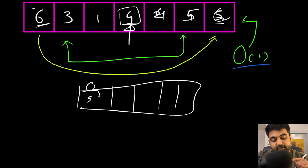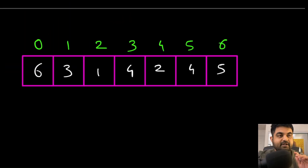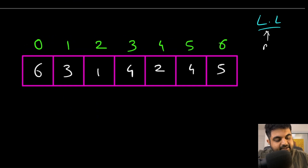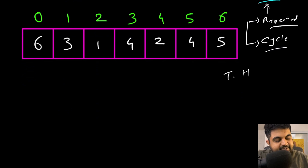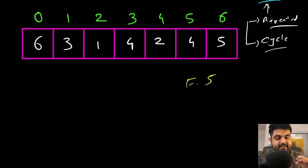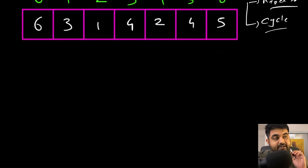For the most optimal solution without modifying the array, we are going to use a very popular technique from linked lists: the tortoise and hare algorithm, also known as Floyd's cycle detection. We use two pointers — a fast pointer and a slow pointer — and iterate until the fast pointer either reaches null or meets the slow pointer, indicating a cycle.